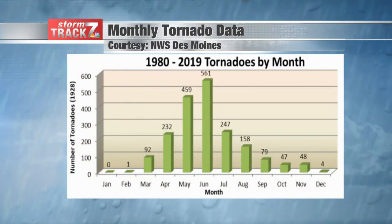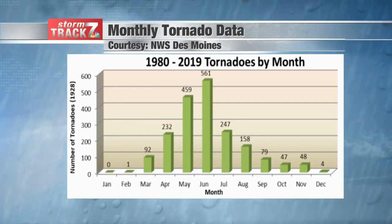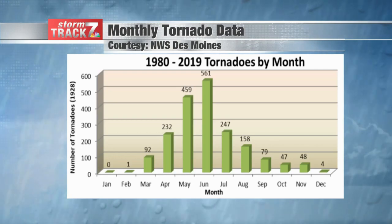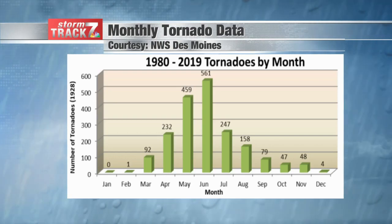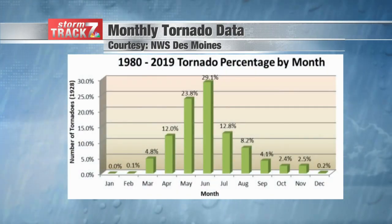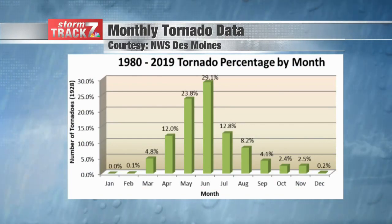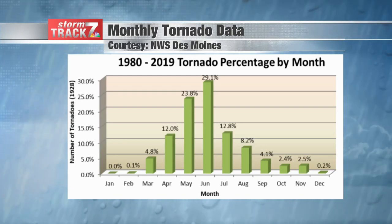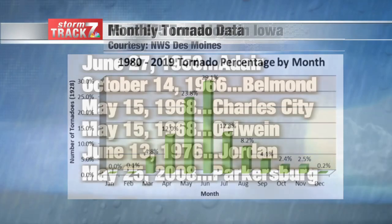Breaking this down by month, we are entering typically the most active period for tornado activity — that includes the months of May and June. June is typically our most active month based on this time frame. Almost 30% of Iowa's tornadoes occur during the month of June. May is pretty active as well, the second most active. Hence why we're going over this, so you are prepared as we enter the most active period.